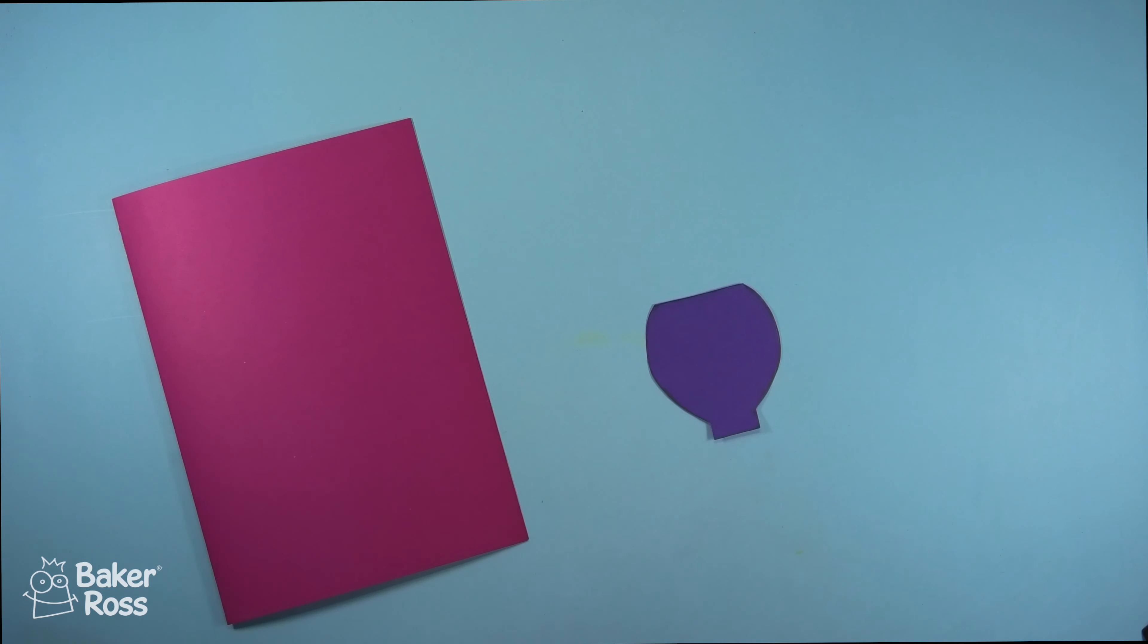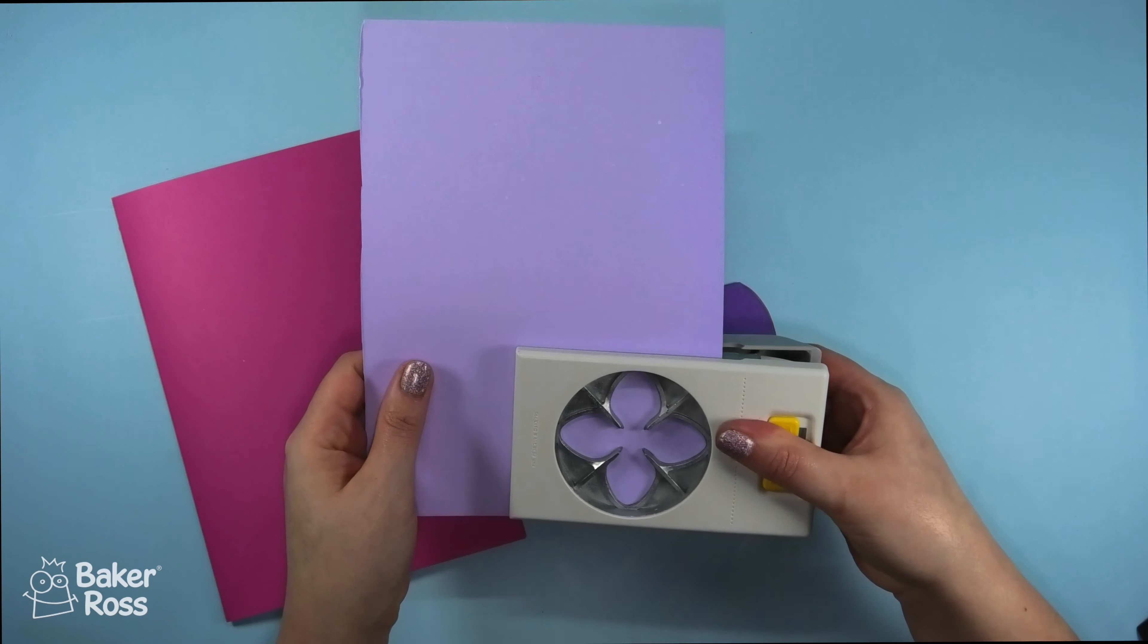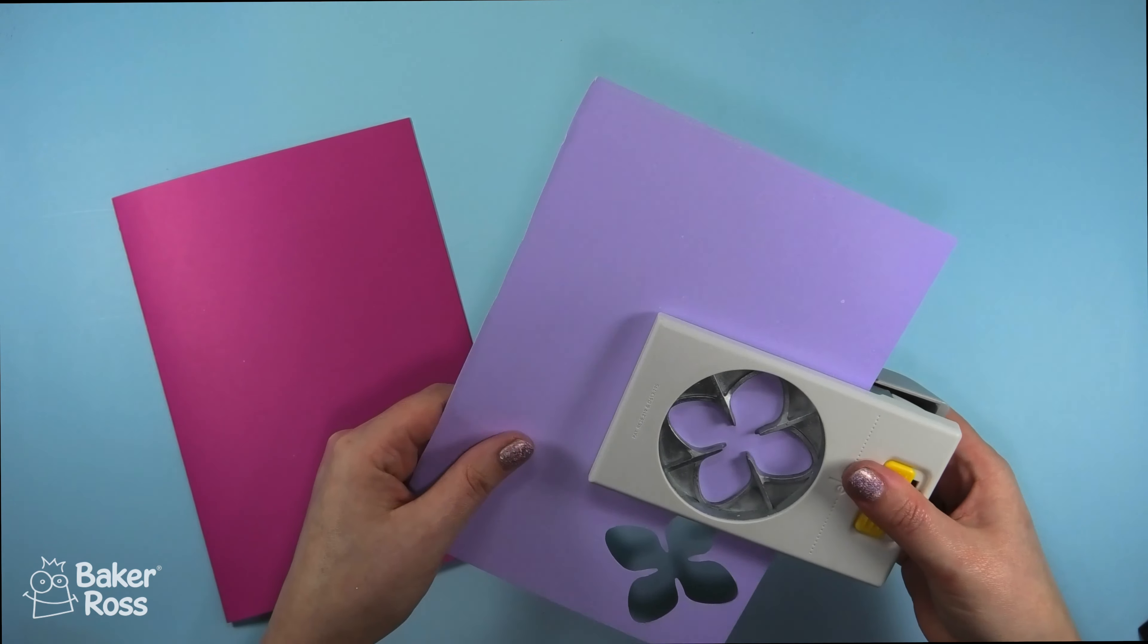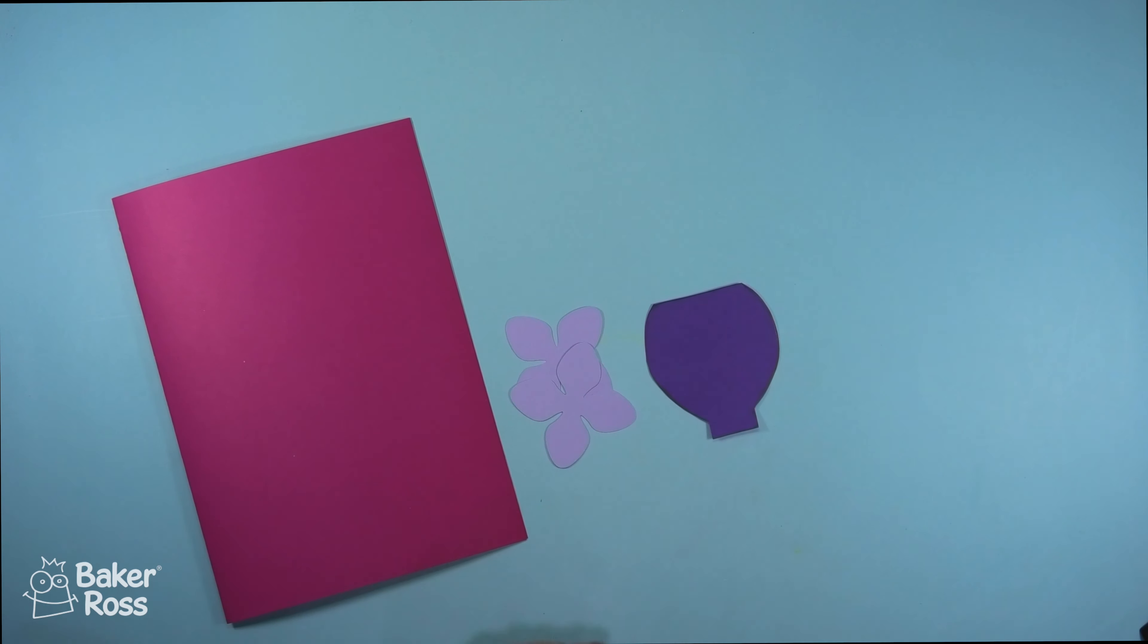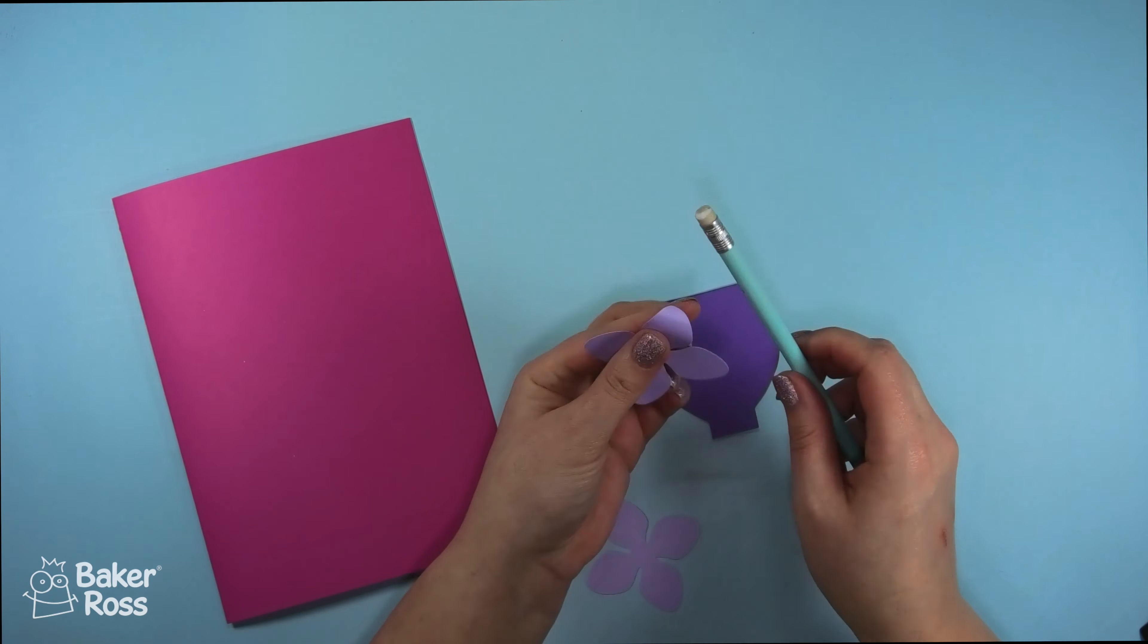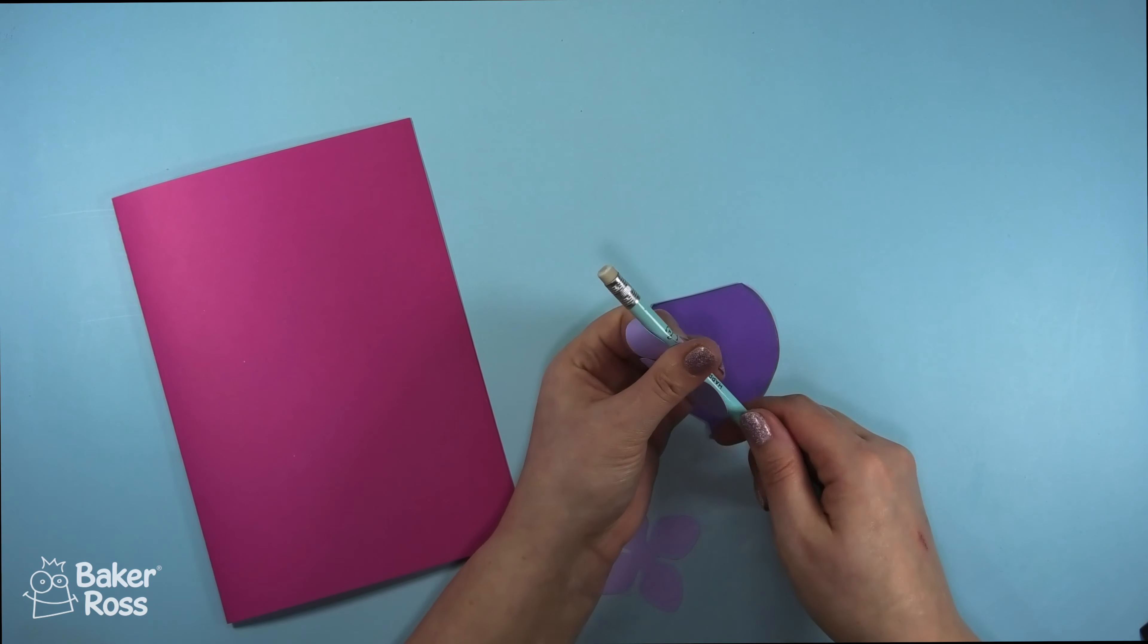Next it's time to create the flowers. I'm going to be using a petal shaped punch but if you don't have this you could definitely just draw a petal shape and then cut around that multiple times to make your flowers. I'm going to be using two of these shapes per flower and I'm just rolling the petals around a pencil to add some dimension.